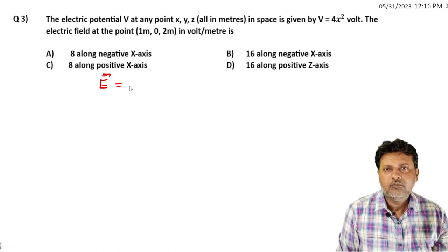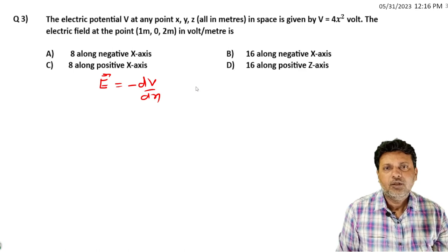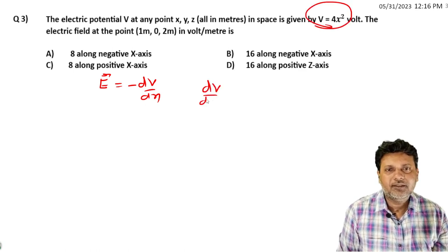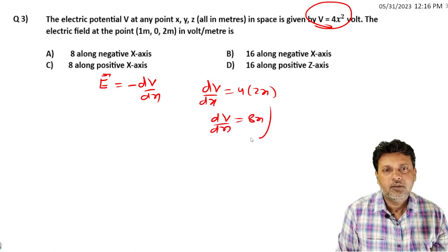Minus dV by dx, potential gradient. V ki value dV by dx kya hala, V ki value, dV here. V is equal to 4 into 2X, so dV by dx is equal to 8X.